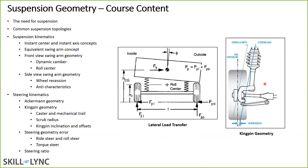We will compare and contrast suspension geometries in the topology section — different architectures and their advantages and disadvantages for front and rear suspension. Active suspension is planned for future courses. In the future, we will offer electronic content: active suspension, electronic stability control, and active steering. But in this course, we will not be looking at active systems. Suspension will be combined with steering — we'll also learn about steering kinematics.